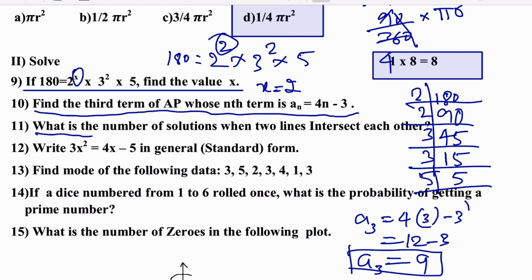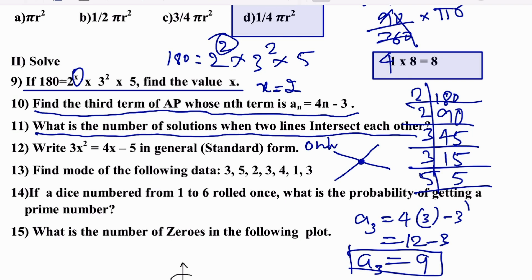What is the number of solutions when two lines intersect each other? If two lines intersect each other, there is only one solution — one intersection point.